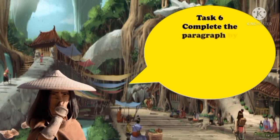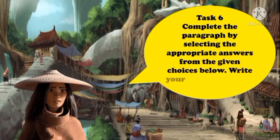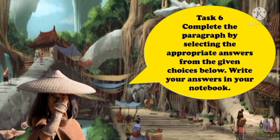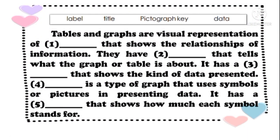For Task 6, complete the paragraph by selecting the appropriate answers from the given choices. Write your answers in your notebook. Tables and graphs are visual representations of [blank] that show the relationships of information. They have a [blank] that tells what the graph or table is about. It has a [blank] showing the kind of data presented. A pictograph is a type of graph that uses symbols or pictures in presenting data, and has a [blank] that shows how much each symbol stands for.